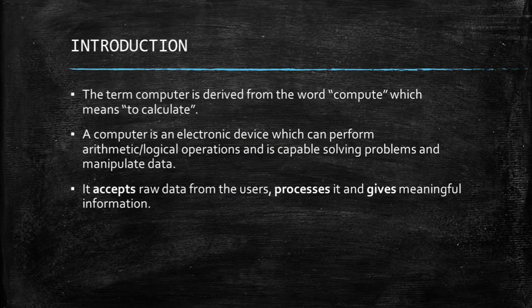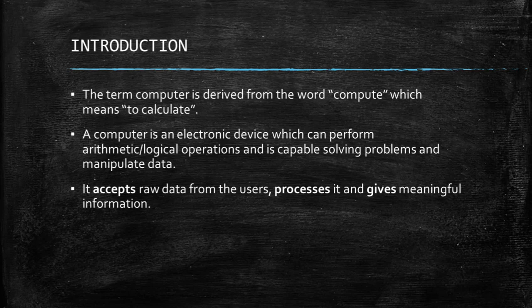The word 'computers' itself has been in use since the 18th century for a person who would sit at a desk throughout the day and do calculations. However, with the advent of machines and their precise, mistake-proof calculations, the term computer gradually shifted to mean a machine that performs calculations. The word computer is derived from the word 'compute', which means to calculate. A computer is an electronic device which can perform arithmetic and logical operations, is capable of solving problems, and manipulate data. It accepts raw data from the user, processes it, and gives meaningful information.